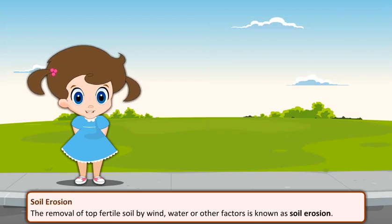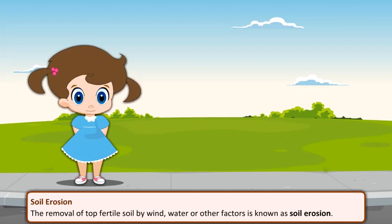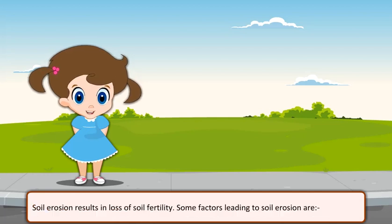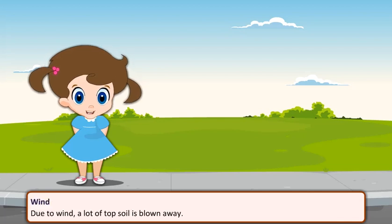Soil erosion. The removal of top fertile soil by wind, water, or other factors is known as soil erosion. Soil erosion results in loss of soil fertility. Some factors leading to soil erosion are wind — due to wind, a lot of topsoil is blown away.